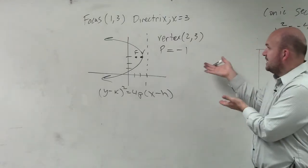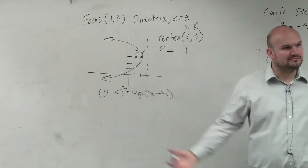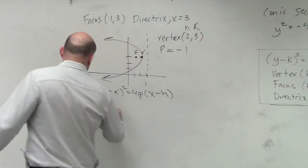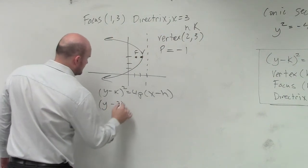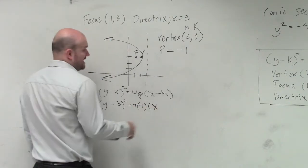And then, now we know h and k, that's h, that's k, and we know p. We're done. y minus k, which is 3 squared equals 4 times negative 1 times x minus h, which is 2.